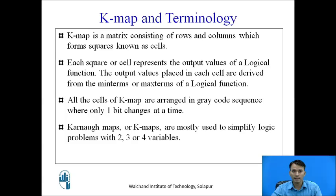K-map is a matrix consisting of rows and columns which form squares known as cells. Each square or cell represents the output values of a logical function. The output values placed in each cell are derived from the min terms or max terms of a logical function. All the cells of K-map are arranged in a grey code sequence where only one bit changes at a time. K-maps are mostly used to simplify logical problems with 2, 3, or 4 variables.